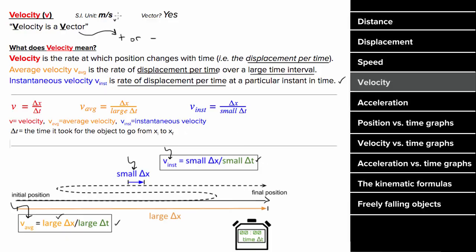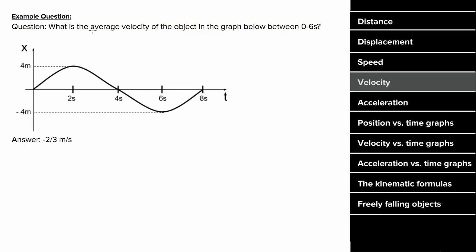Or for the instantaneous velocity at a particular moment, you would take an infinitesimal displacement at that moment and divide by the time it took for that displacement. The units of velocity are meters per second, and it is a vector, which means it can be negative. If velocity is directed leftward or downward, we typically consider it a negative value. For the average velocity between zero and six seconds on this graph, the displacement is negative four meters over six seconds, giving negative two-thirds meters per second.